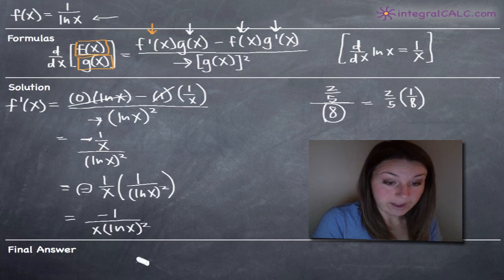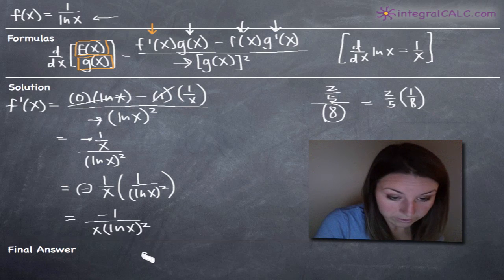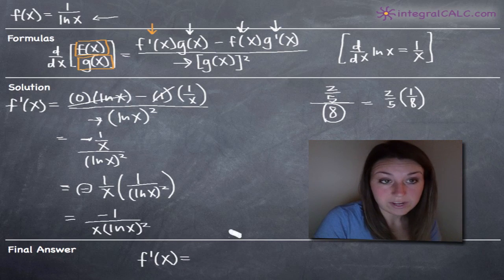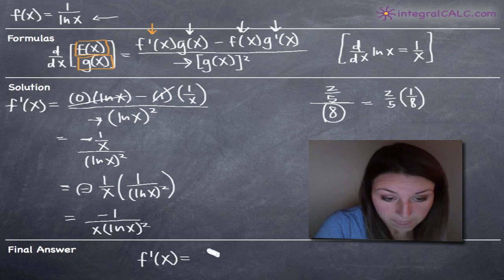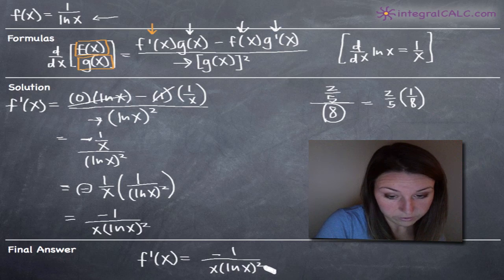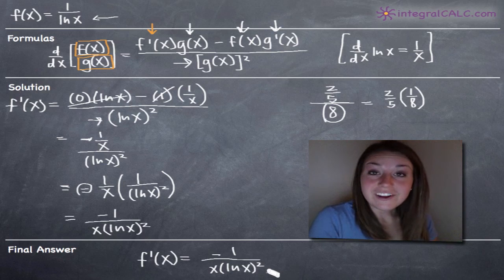So we'll go ahead and call that our final answer. And our final answer, of course, is going to be in the form f prime of x which indicates that this is the derivative of the function f of x. So f prime of x is equal to negative 1 divided by x times the natural log or ln of x squared. That's it. That's our final answer.